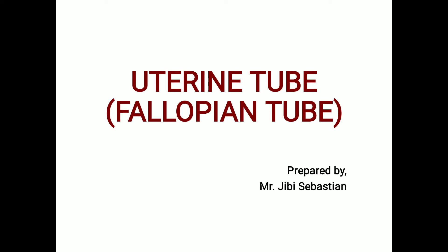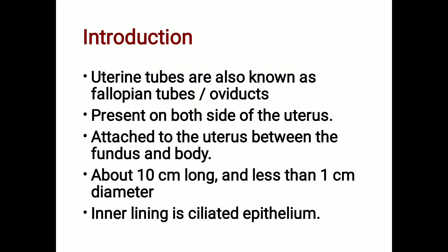Today we'll discuss the uterine tube, also called the fallopian tube or oviduct. These are present on both sides of the uterus.